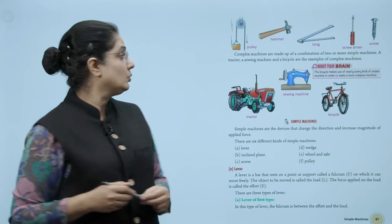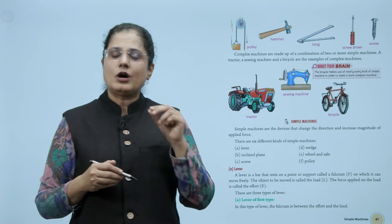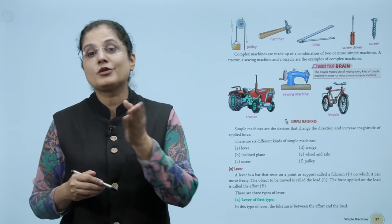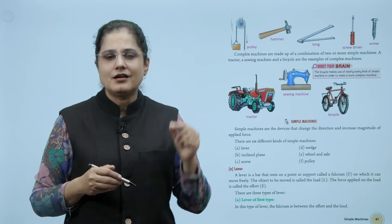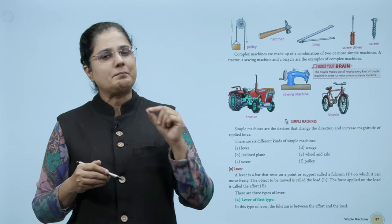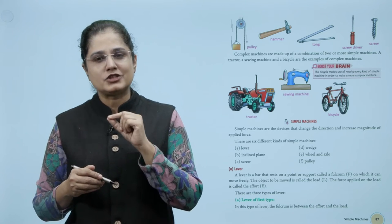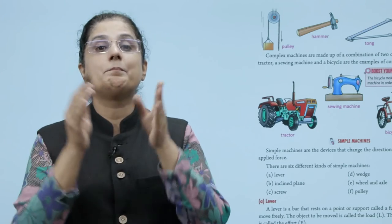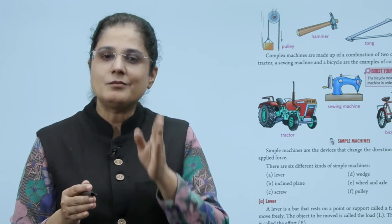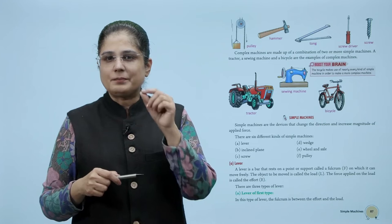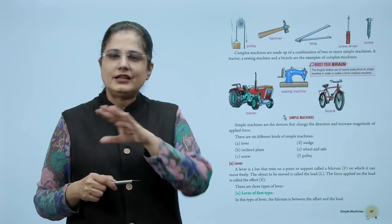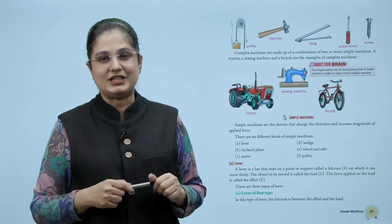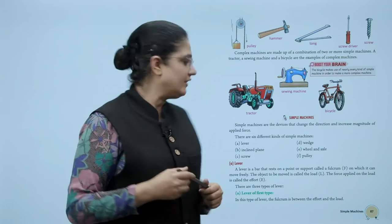Complex machines are made up of a combination of two or more simple machines. A tractor, a sewing machine, and a bicycle are examples of complex machines. The bicycle makes use of nearly every kind of simple machine to make a more complex machine.